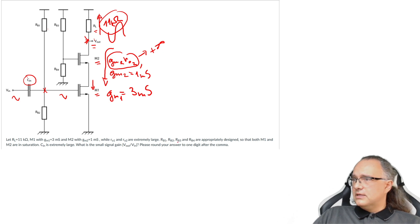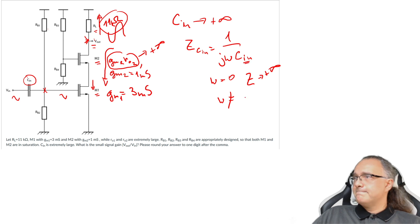So the biasing resistors are appropriately designed so that both M1 and M2 are in saturation. C-in is extremely large. So this is a clue that if C-in is very large, then the impedance that we have of C-in is 1 over jω·C-in, which is infinity. That means that for ω, for frequencies that are zero, we will have Z very large infinity. But then for frequencies which are not zero, because C-in is very large, then Z will be very small. So this means short here.